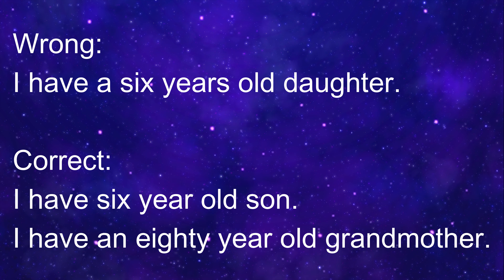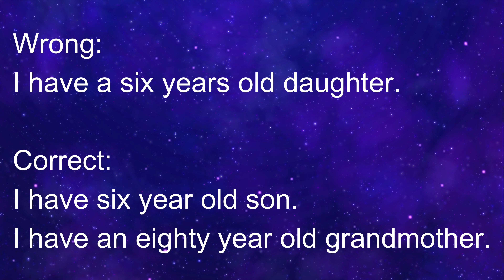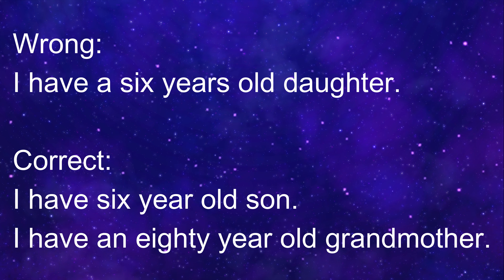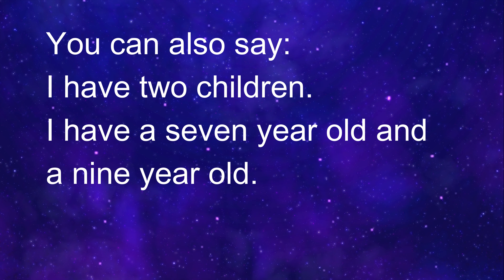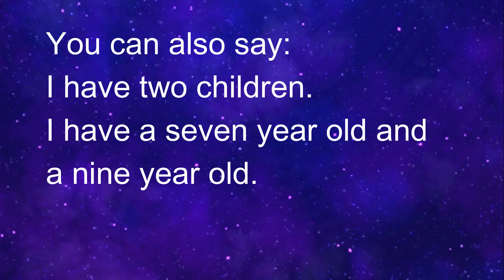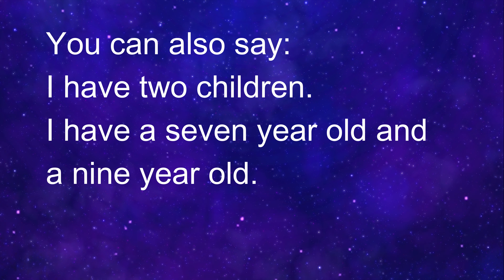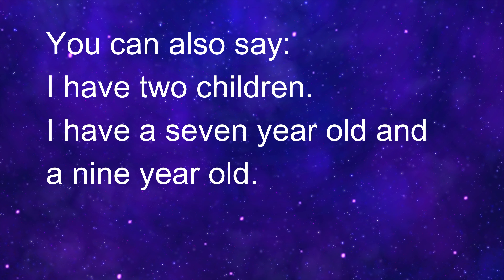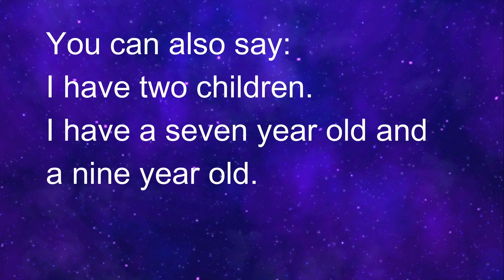Here, 'year' should be in singular form — you cannot use the plural form, so you cannot add an 's'. For example: I have an eighty-year-old grandmother. And you can also say: I have two children — I have a seven-year-old and a nine-year-old. Both instances of 'year' cannot take an 's'; only the singular form is correct.